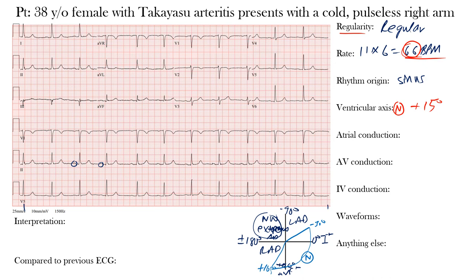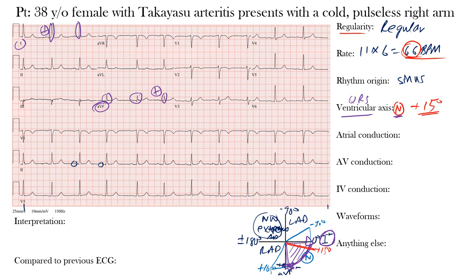Looking at our axis: lead I has upright QRS complexes, meaning we're going toward the positive end of lead I. aVF also has upright QRS complexes, meaning we're going to the positive end of aVF. That means our axis lies somewhere in the normal region — within normal limits. The actual axis is +15 degrees, which the EKG machine calculated. So we have a normal axis.